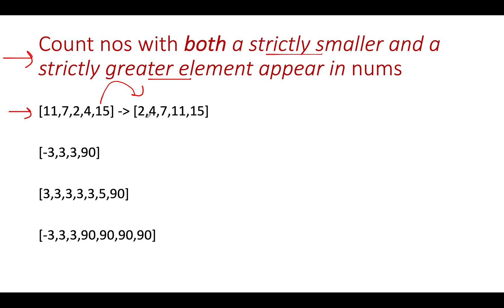Let's count those numbers that have a strictly smaller and a strictly greater element in the array. Does 2 have a strictly smaller element? No, so it will not be part of the answer. Next, 4 has a strictly smaller element and also a strictly greater element — any of 7, 11, 15 qualify — so we've identified one such number. Next, 7 has strictly smaller elements (4 or 2) and strictly greater elements (11 or 15), so the count updates to 2.